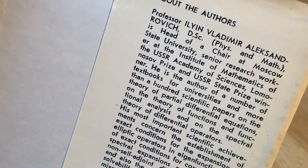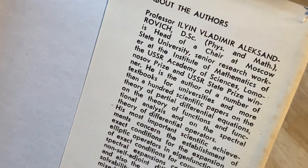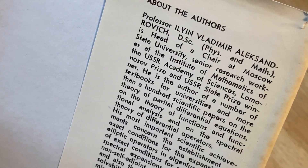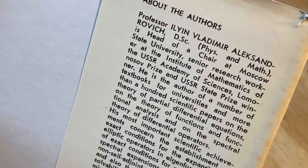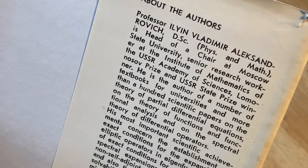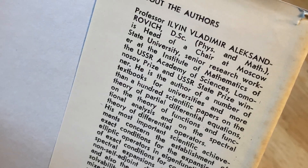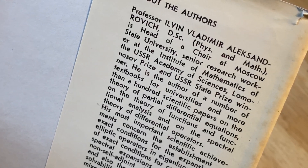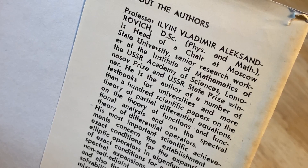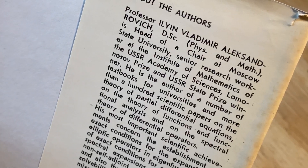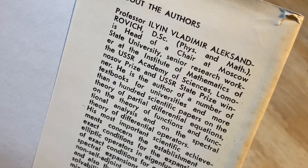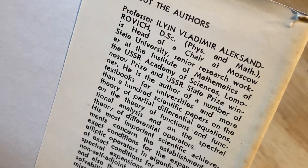So here it talks about the authors — they're prominent researchers. Professor Ilyin Vladimir Alexandrovich is head of a chair at Moscow State University, Senior Research Worker at the Institute of Mathematics of the USSR Academy of Sciences, Lomonosov Prize and the USSR State Prize winner. He's the author of a number of textbooks. The university has more than 100 scientific papers.